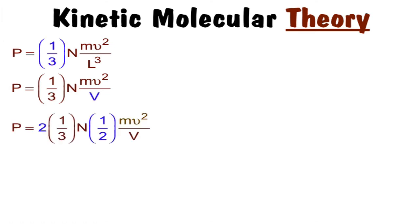So now it becomes two times one-third N times one-half mV² over V. Again, I'm just multiplying top and bottom of that fraction by half, and I'm moving it around. And what I see is this one-half mV². That's kinetic energy. So the pressure is equal to 2/3 N times the kinetic energy divided by the volume.